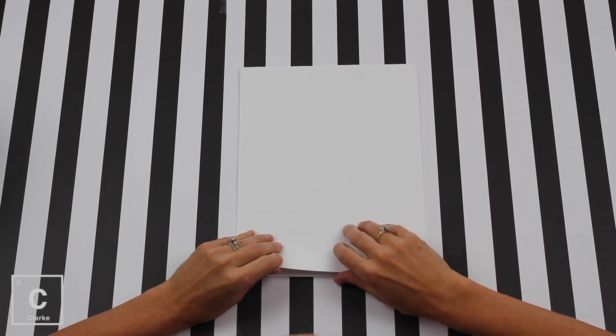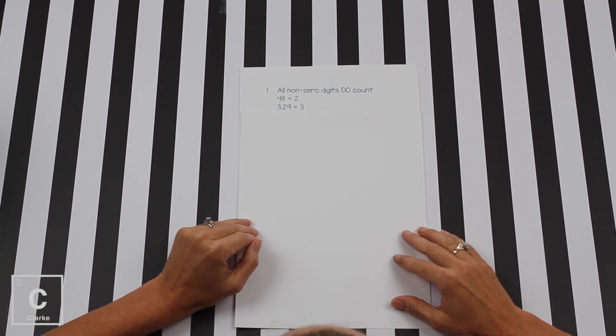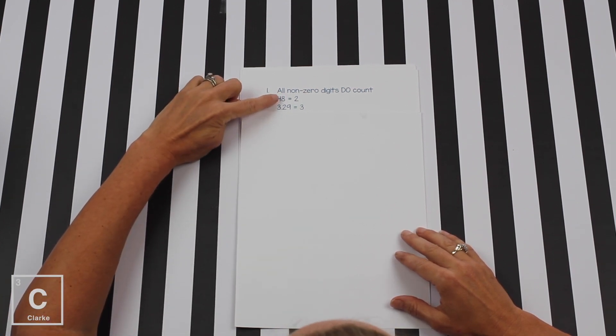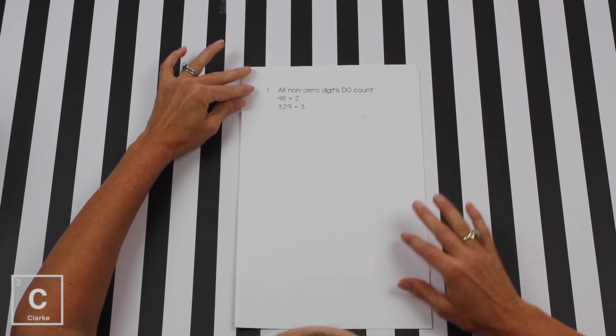Okay, let's look at the rules for Significant Figures. The first rule, all non-zero digits do count. 48, no zeros, two digits, two SIGFIGS. 3.29, no zeros, one, two, three, three SIGFIGS.